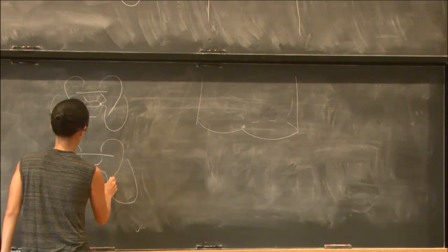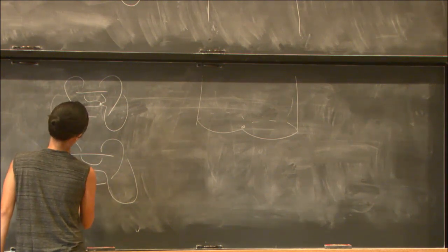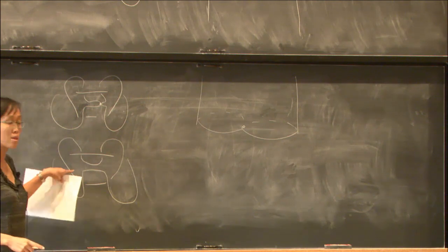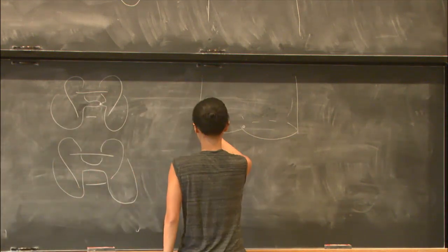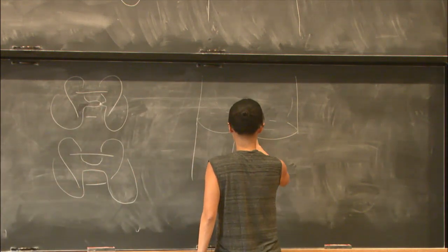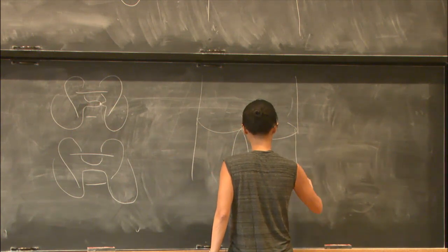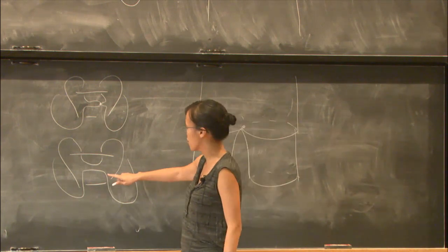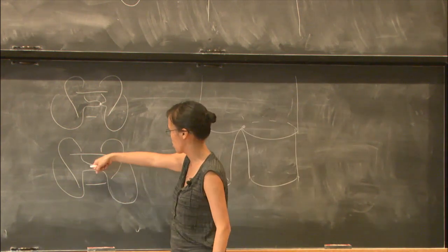Then as you continue down, this is going to split apart in the opposite direction that those strands came together. It's just splitting apart in the opposite direction. Now if you look, this is a two-component link. In terms of the surface...